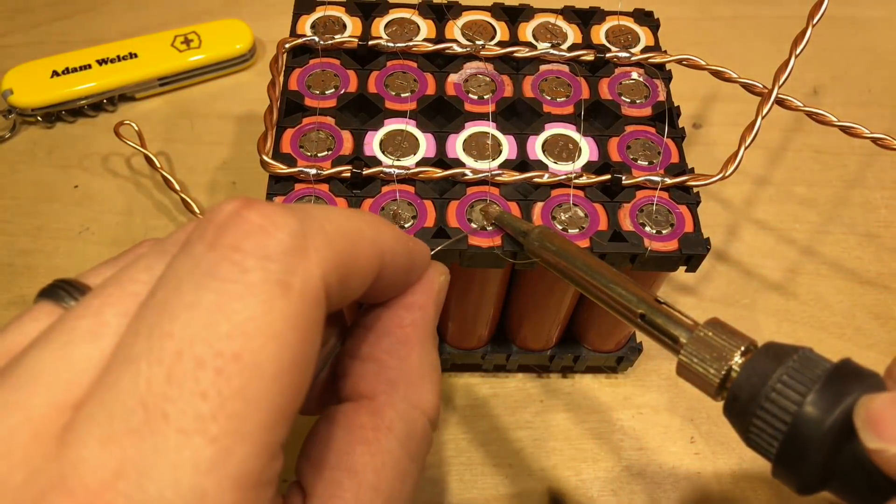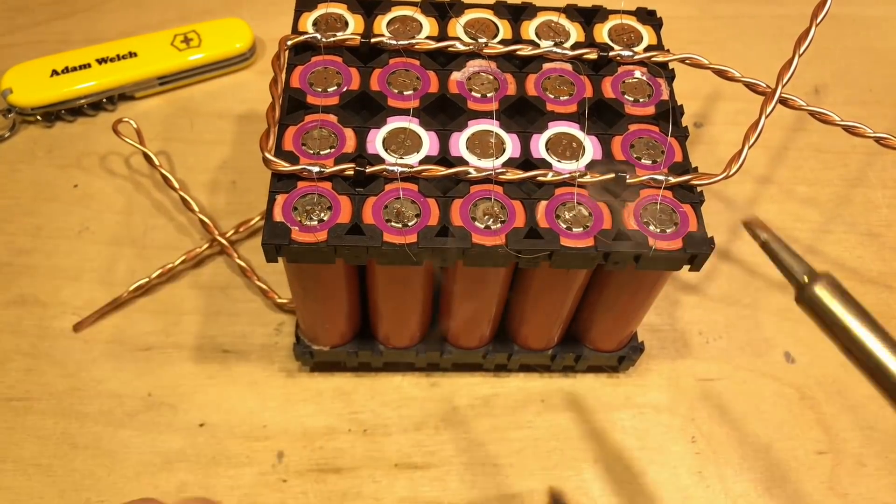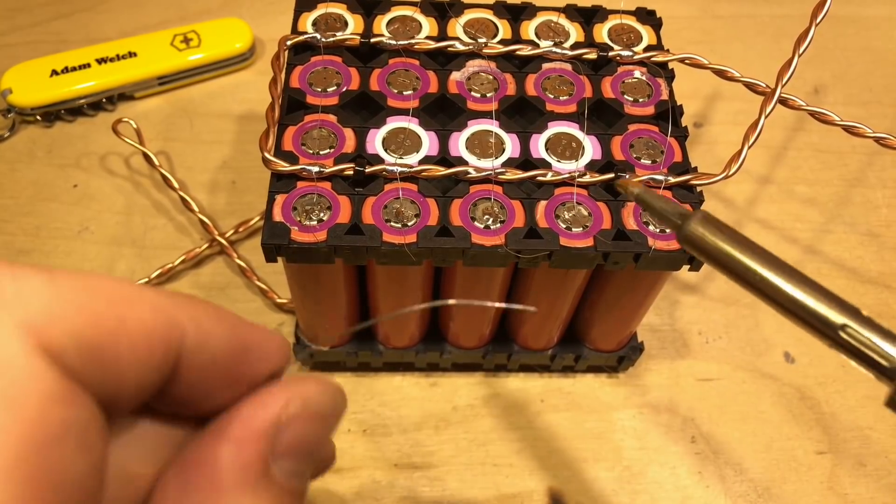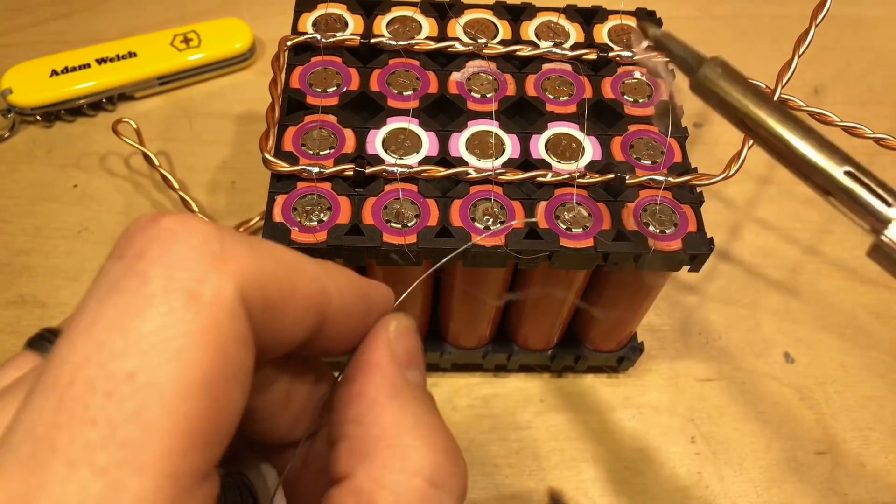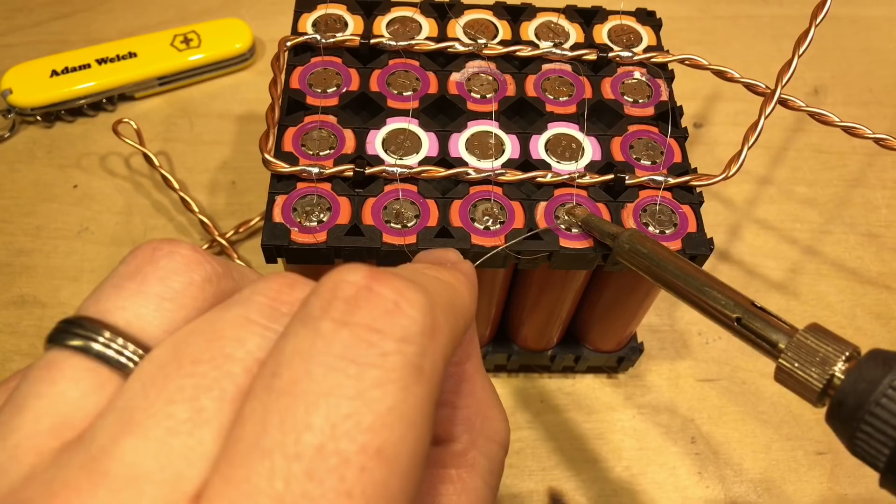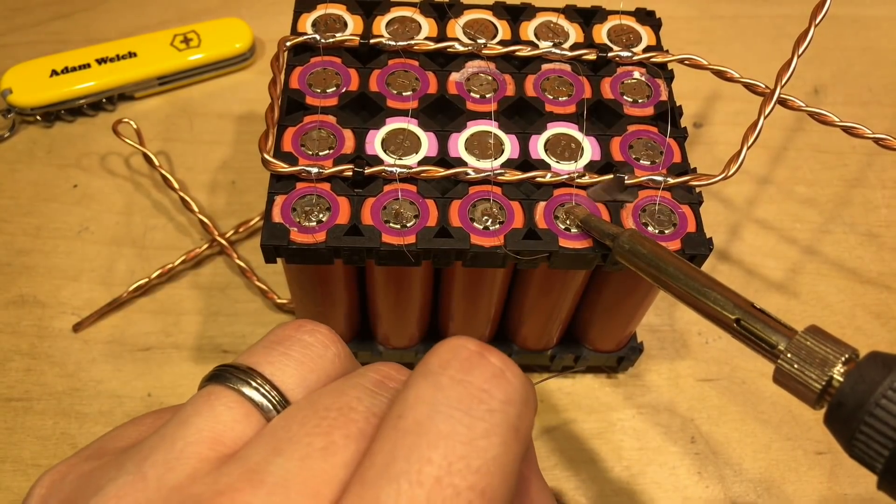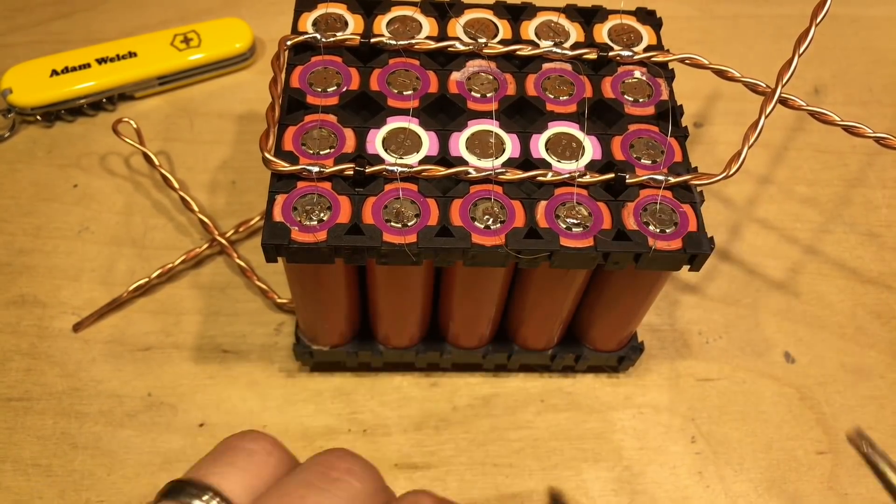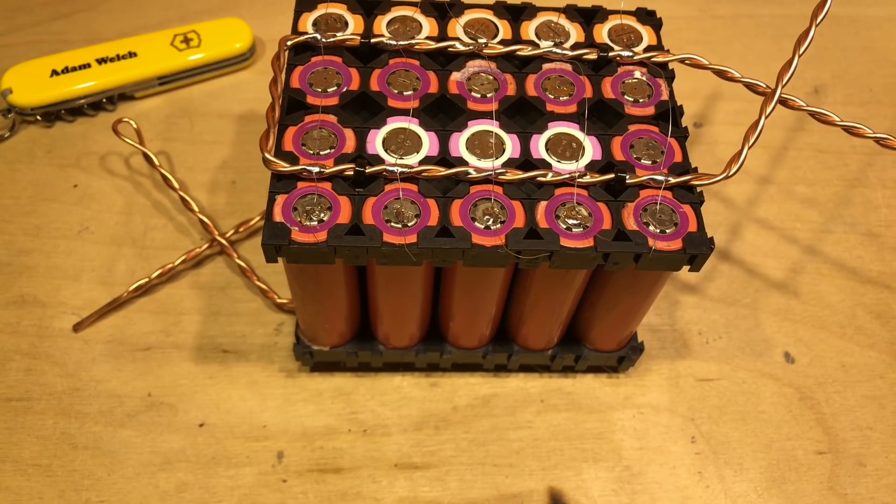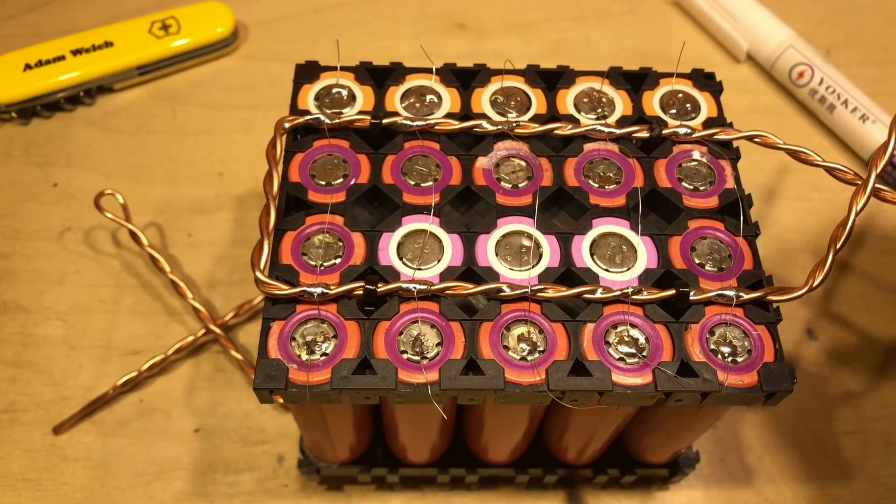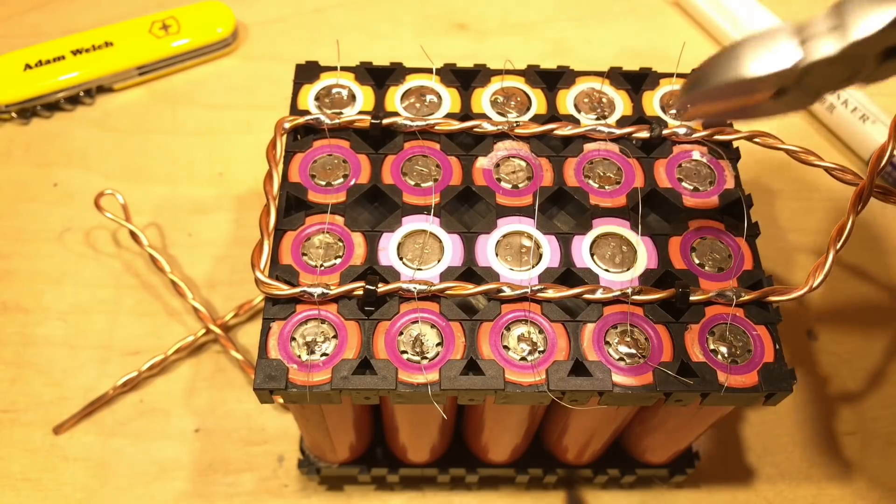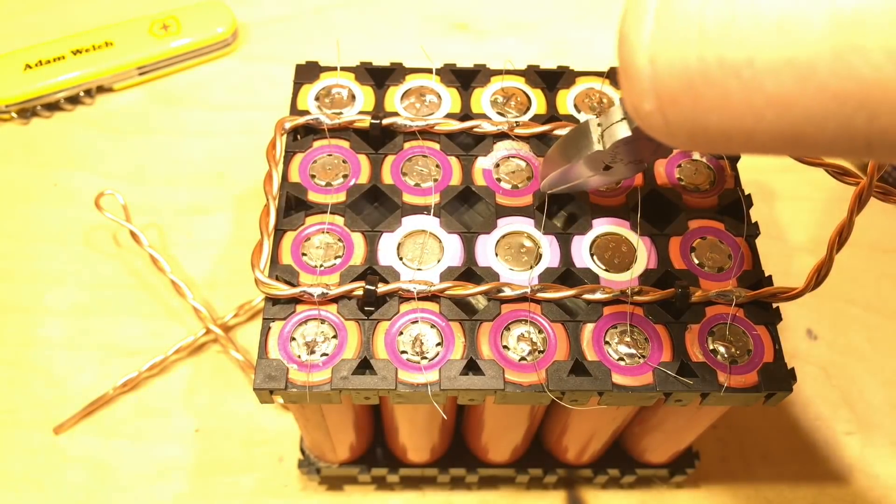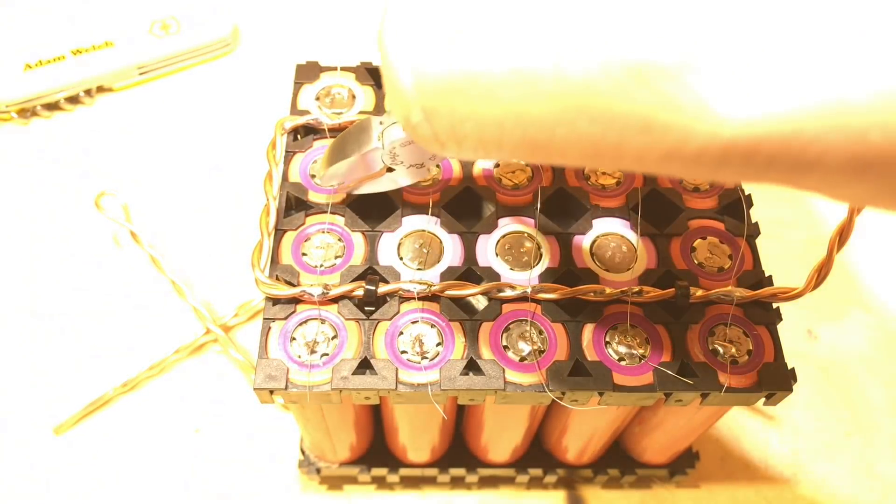Obviously doing the positive side is an awful lot easier because the positive side of the cell here is just a thin piece of metal but the negative side is a little bit more tricky. We'll move on to doing that in a second. Now I've soldered all the outer fuses.